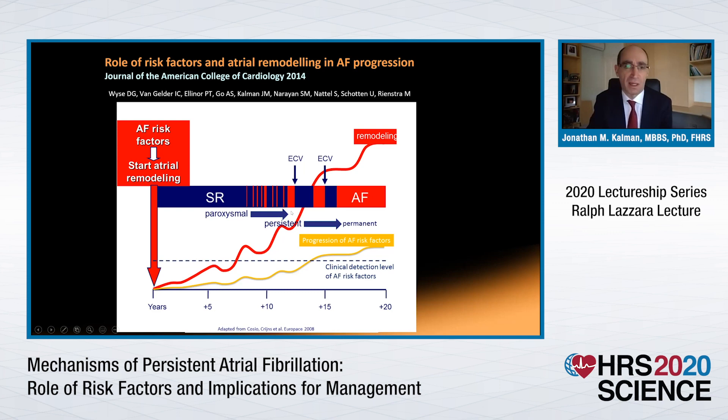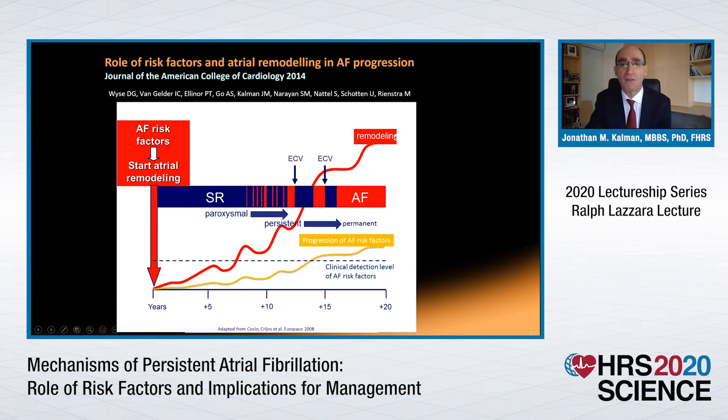To conclude: looking at the progression from sinus rhythm through paroxysmal and persistent to permanent AF, underlying it are the risk factors that drive progressive remodelling. When we reach advanced remodelling, significant reversal may be impossible. But at intermediate stages, not only can we arrest remodelling, but we may be able to reverse it — if we not only treat the arrhythmia itself but also treat the associated risk factors. There is emerging evidence that this is indeed important.